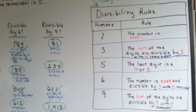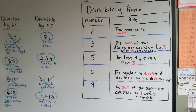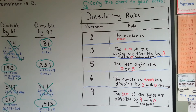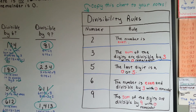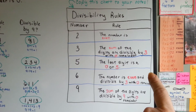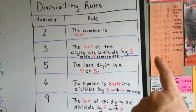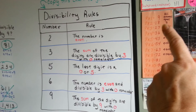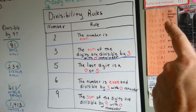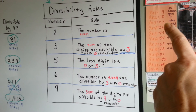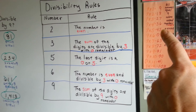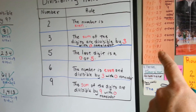Those are the divisibility rules and factors. Make sure you copy this chart because it's going to be very helpful to you in the future. For those of you who have finished writing the chart — did you know that every 9 times table product's digits equal 9? 9 times 1 is 9. 9 times 2 is 18, because 1 plus 8 is 9. 9 times 3 is 27, and 2 plus 7 is 9. 9 times 4 is 36, and 3 plus 6 is 9. 9 times 5 is 45, and 4 plus 5 is 9. Even 9 times 10 is 90, and 9 plus 0 equals 9.